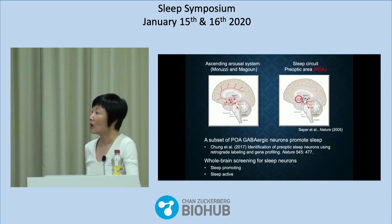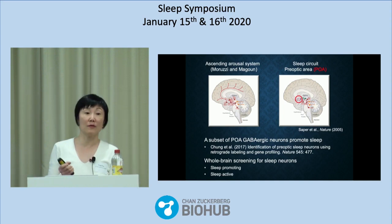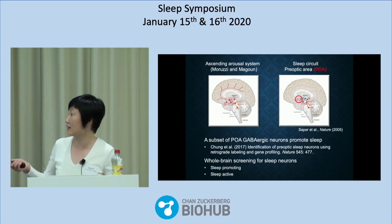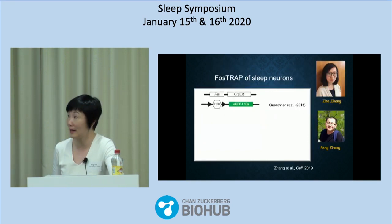We have two basic criteria. First, neurons need to be sleep-promoting: their activation should increase sleep and their inactivation should decrease sleep. Second, they should be sleep-active — they need to be active at the right time to do their job. For screening, we have two corresponding strategies: we can either screen for sleep-active neurons and see if they're also sleep-promoting, or search for sleep-promoting neurons and see if they're also sleep-active. I'm going to give you an example of each strategy today.